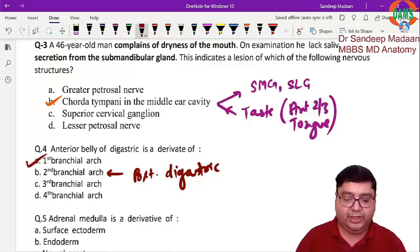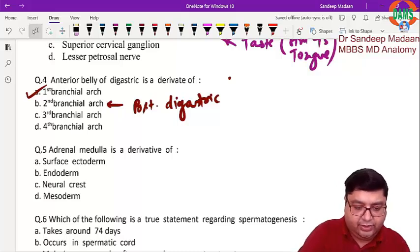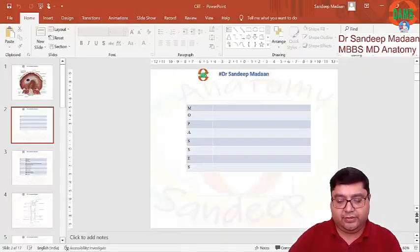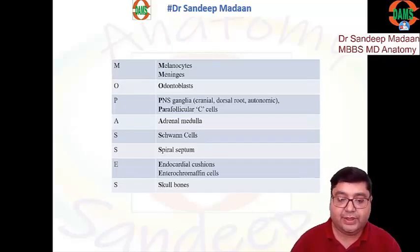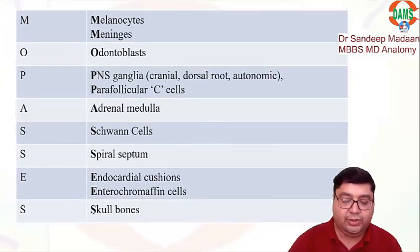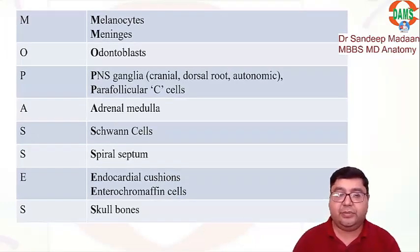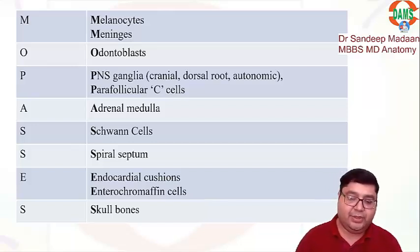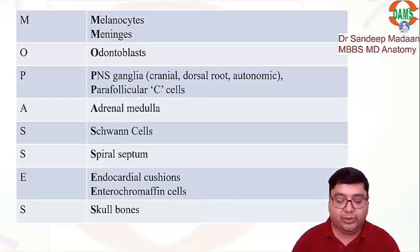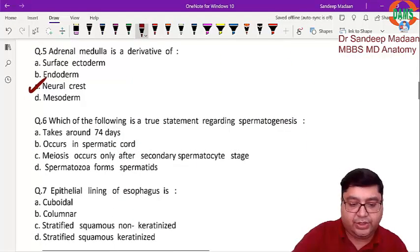The adrenal medulla is a derivative of neural crest cells. We must also know the other neural crest cell derivatives, remembered by the mnemonic 'MO PASSES': melanocytes, meninges, odontoblasts, PNS ganglia (dorsal root, cranial parasympathetic, etc.), C cells, adrenal medulla, Schwann cells, spiral septum, endocardial cushions, and skull bones.